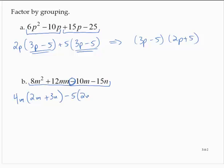Negative 5 times 2m is negative 10m. Negative 5 times a positive 3n is a negative 15n. So now I see the common factor of 2m plus 3n. And it was multiplied by 4m minus 5.